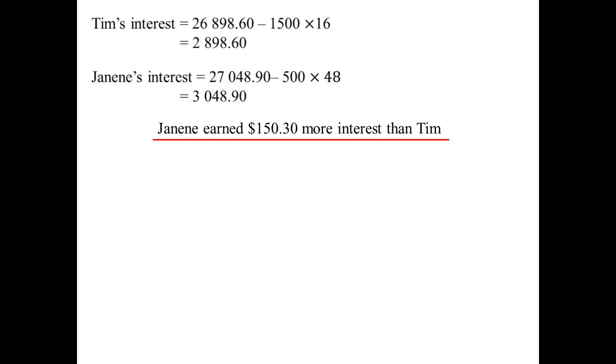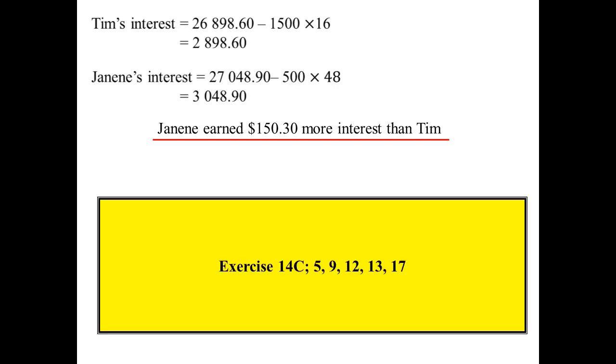Tim's interest is $2,898. So the amount he ended up receiving, minus all those payments he made, Janene, $3,000. So she ended up, it wasn't a lot, but $150.30 more than Tim. Okay, let's have a look at these few from 14C.